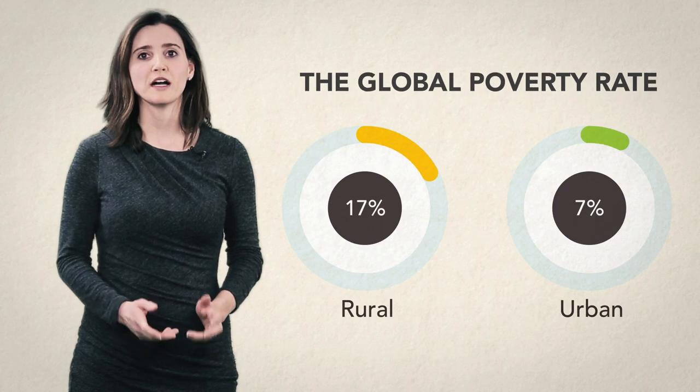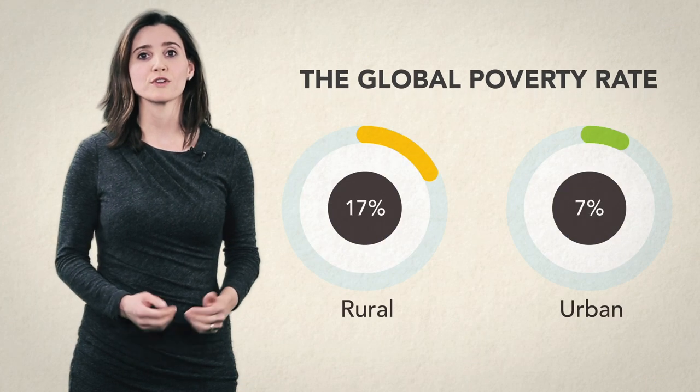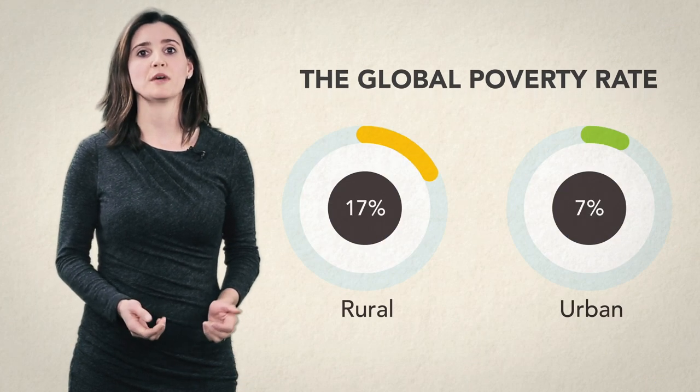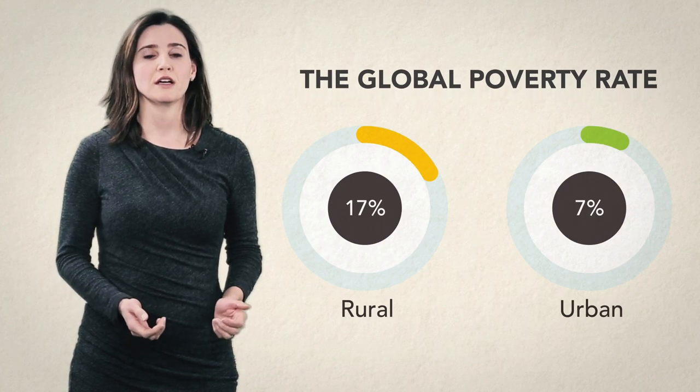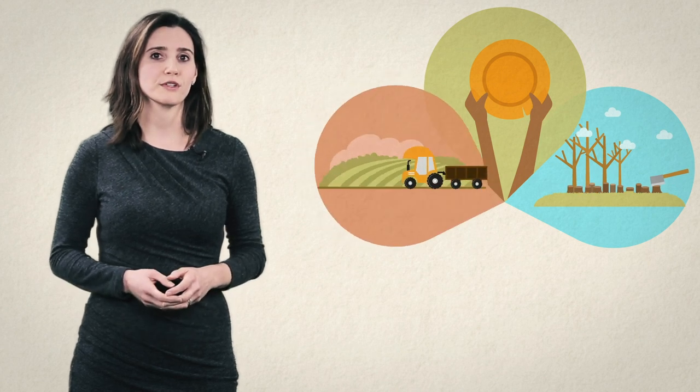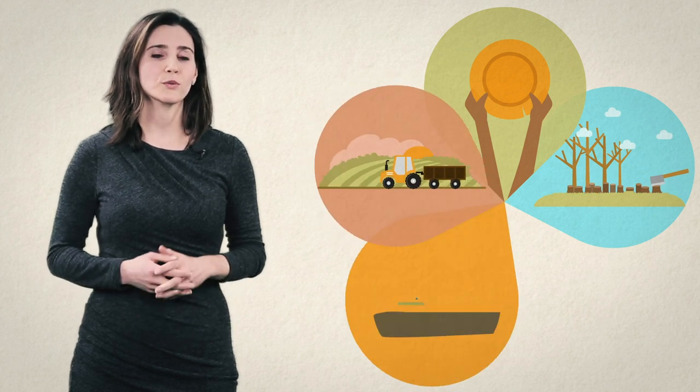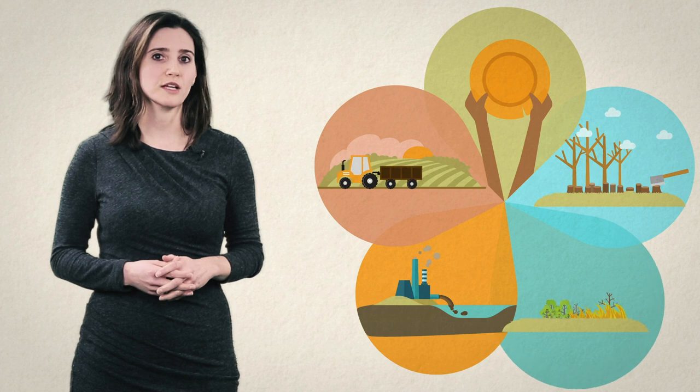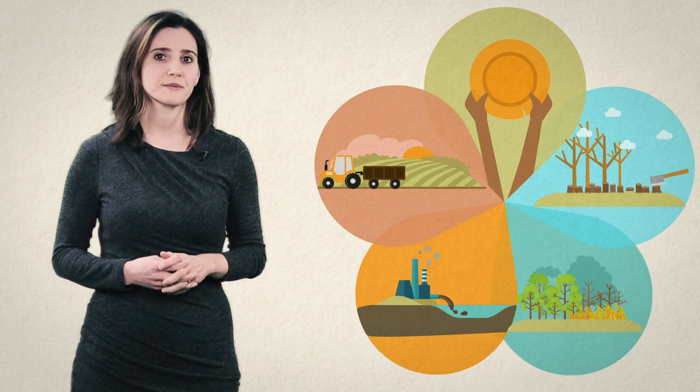The global rural poverty rate is more than twice the urban poverty rate. Hunger and malnutrition remain more prevalent in rural areas, and rural environments are threatened by deforestation, overuse of agricultural inputs, soil and water degradation, and the effects of climate change.